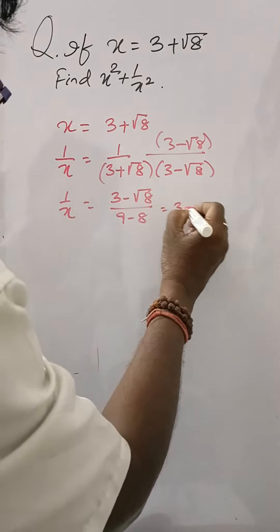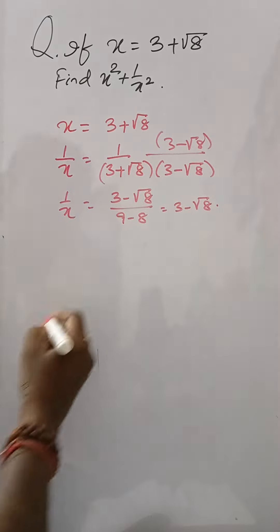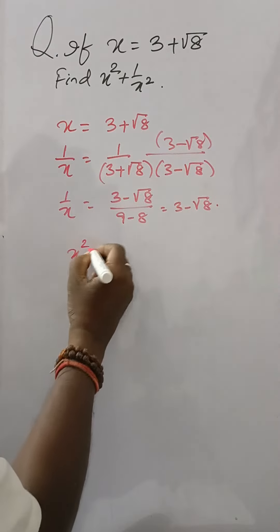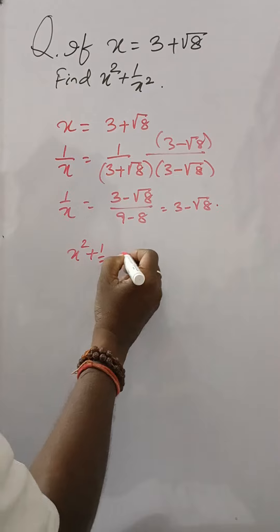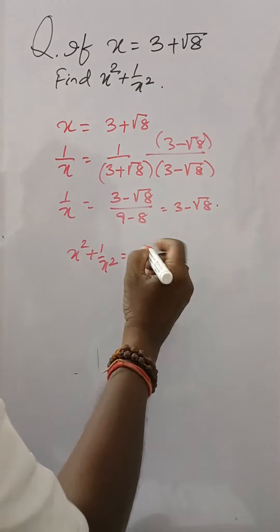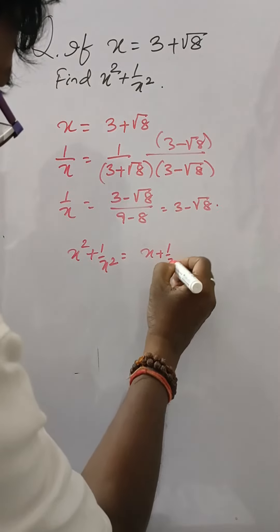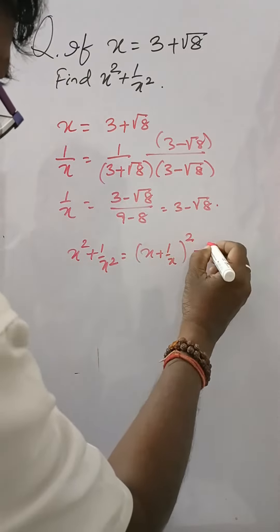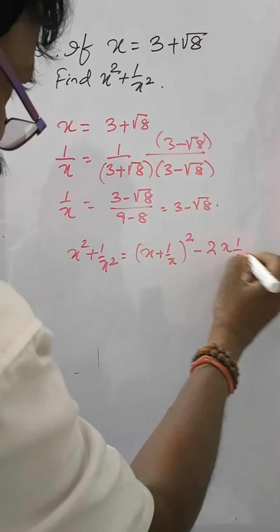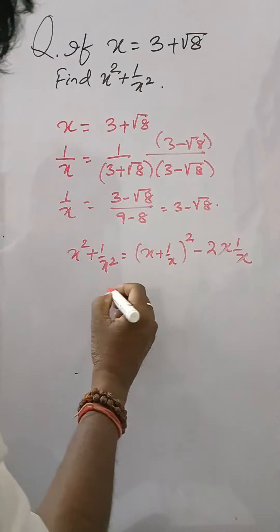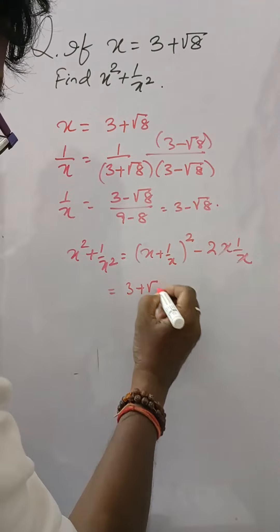Now for x square plus 1 by x square, by identity this equals x plus 1 by x whole square minus 2. The x and 1 by x cancel, so we substitute: 3 plus under root 8 plus 3 minus under root 8 whole square minus 2.